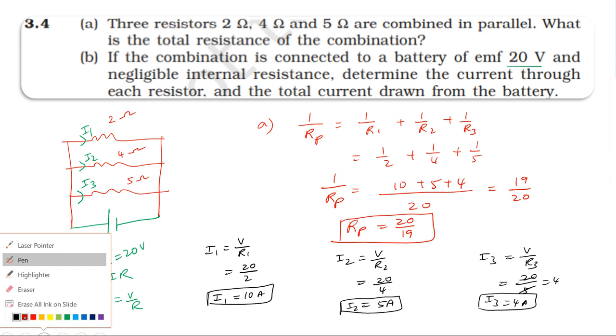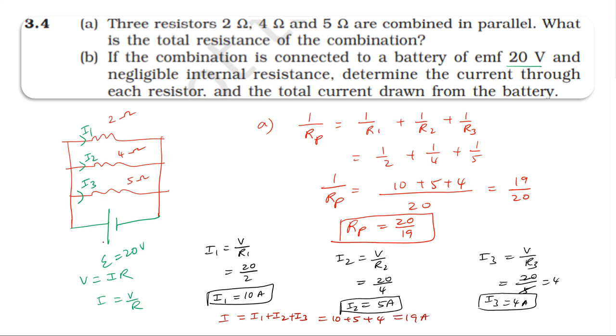The current drawn from the battery is divided. Total current drawn from the battery is I1 plus I2 plus I3. I1 is 10A, I2 equals 5A, I3 equals 4A. That's 19A. The total current is 19A.